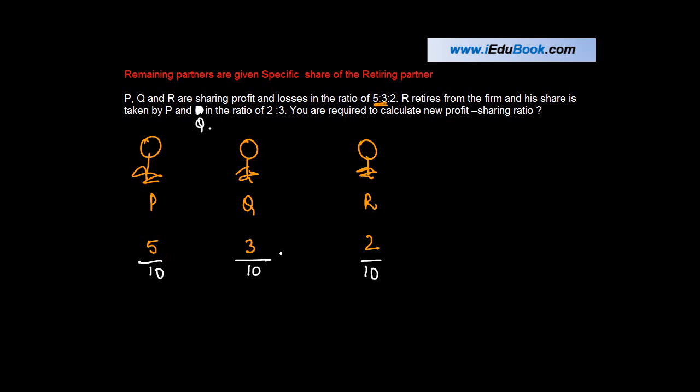So they are sharing profits and losses in the ratio of 5/10, 3/10, and 2/10. Now R retires from the firm. R is this person. R retires from the firm, and his share is taken by P and Q in the ratio of 2:3. So the share of R, which is 2/10, is distributed amongst P and Q in the ratio of 2:3.